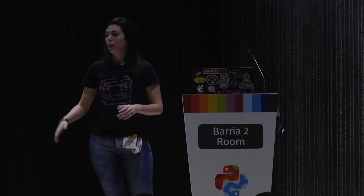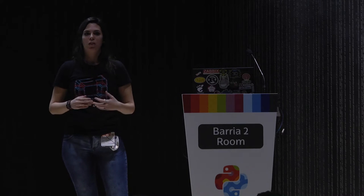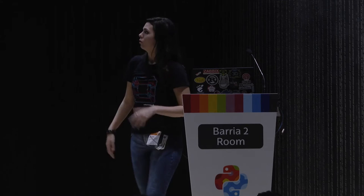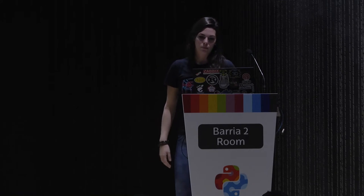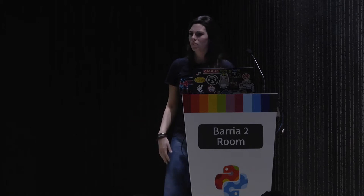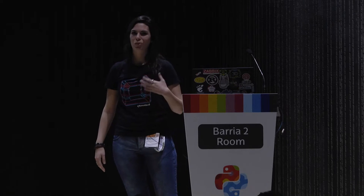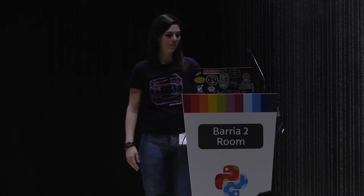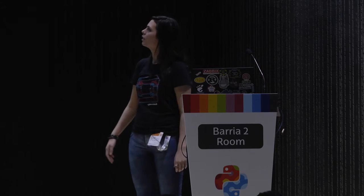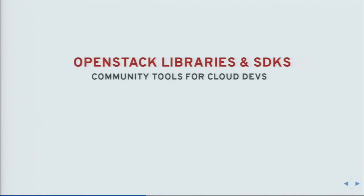To wrap up the Grace Hopper anecdote: we followed the same architecture but ended up using a library called Apache Libcloud, which I'll talk more about in upcoming slides. Everything worked out perfectly. We had the applications running and it was an amazing experience, and it gave me the feeling that there was something to do in the OpenStack development area.